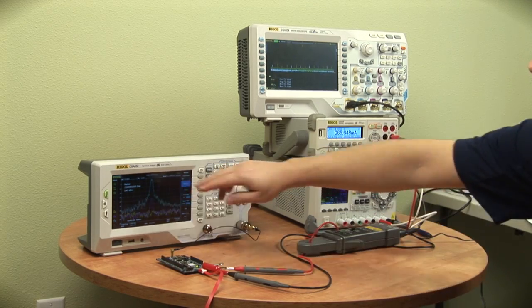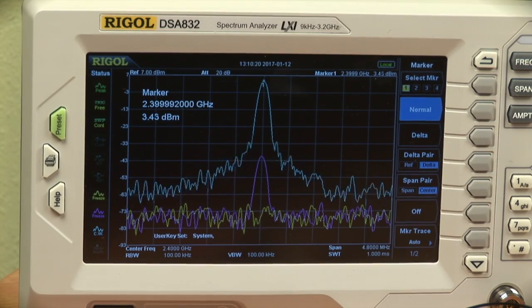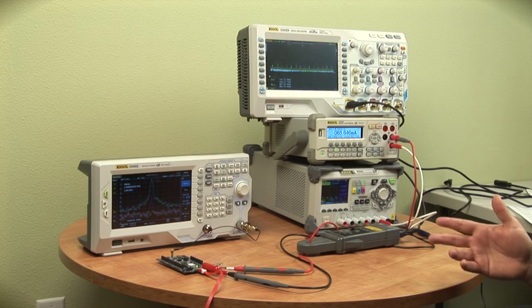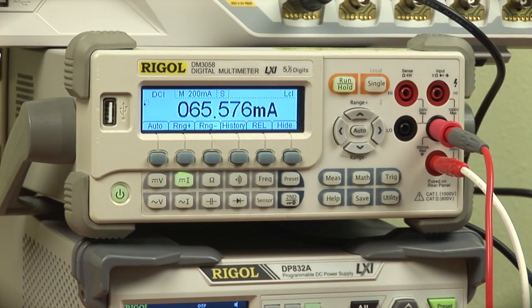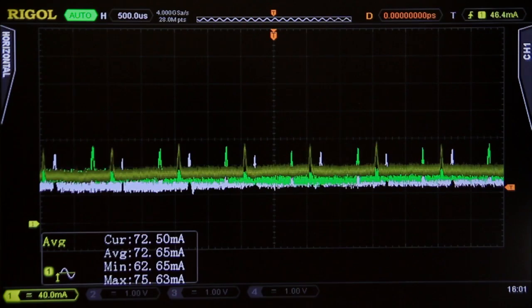We see the blue trace on the spectrum analyzer in reference to the others from the previous test. And now we see the DMM measuring about 65 milliamps and the scope measuring up at about 72.